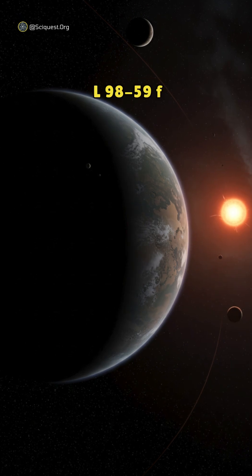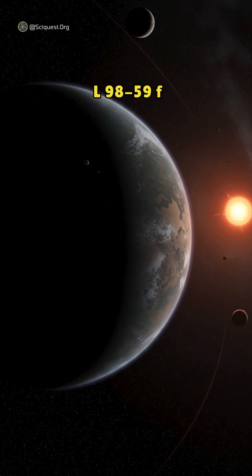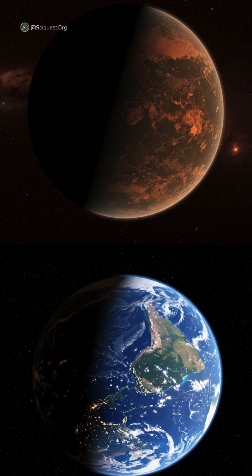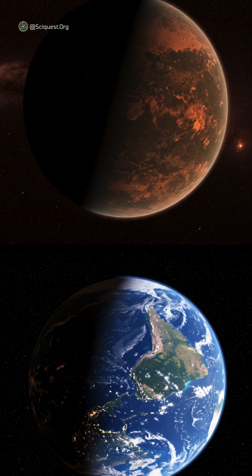And the fifth planet, L98-59f, sits squarely in its habitable zone. It's what astronomers call a super-Earth, about 2.8 times Earth's mass.